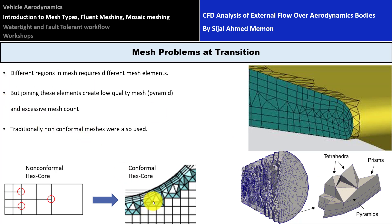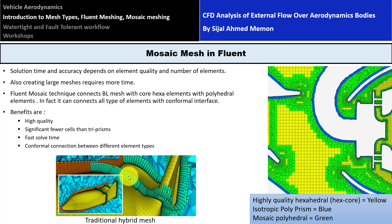The solution is that we should use appropriate transition elements between hex or prism elements on one side and tetra elements on the other. Fluent has a new technology called mosaic technology. It is not a meshing type itself — it is a way of connecting different mesh types together.